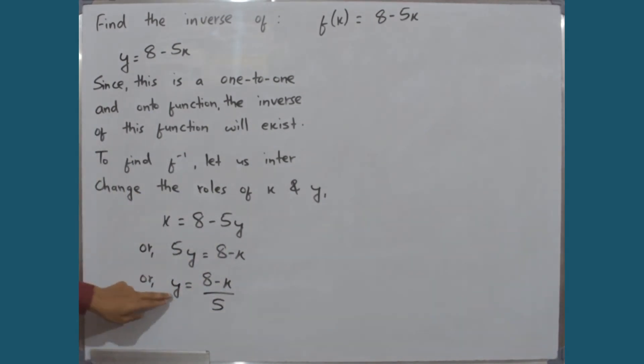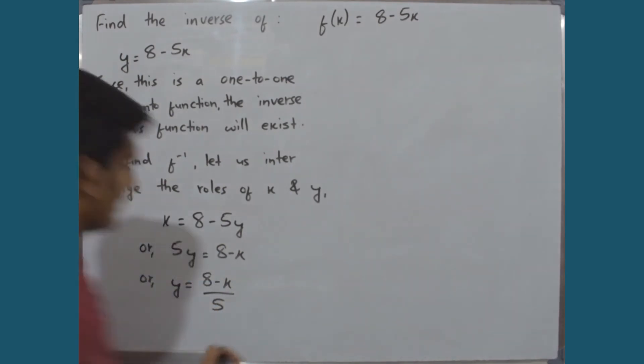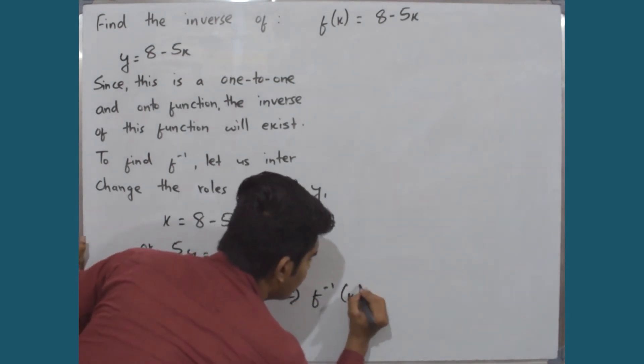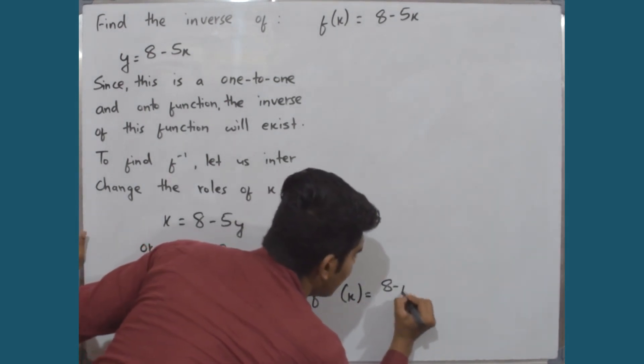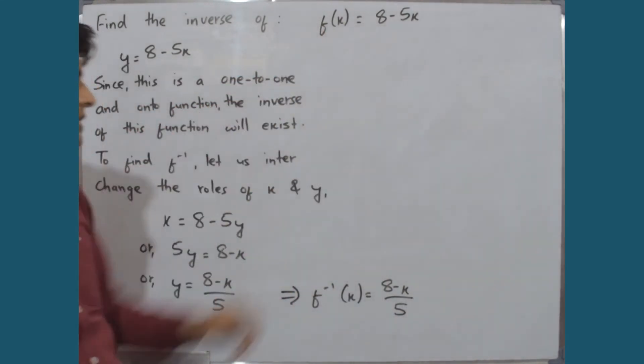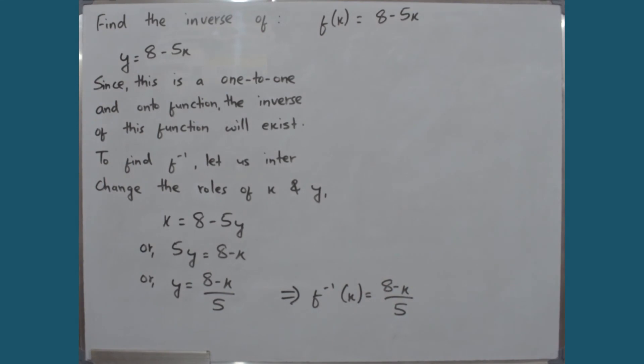We can write this as f inverse of x is equal to 8 minus x divided by 5. Therefore, the inverse of this function is 8 minus x divided by 5.